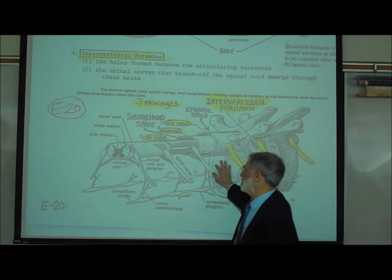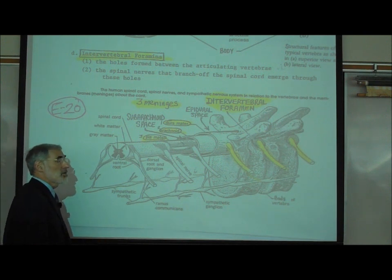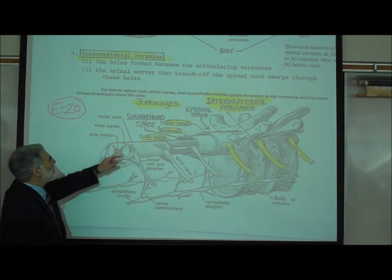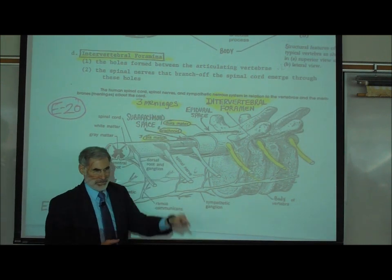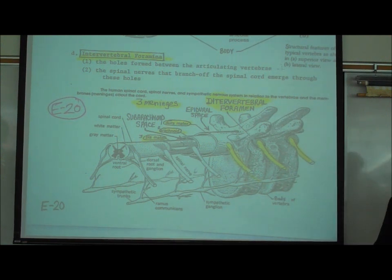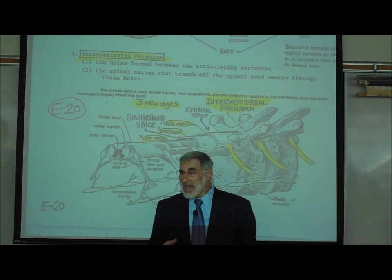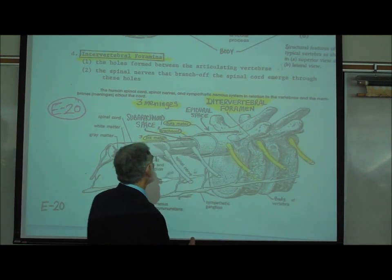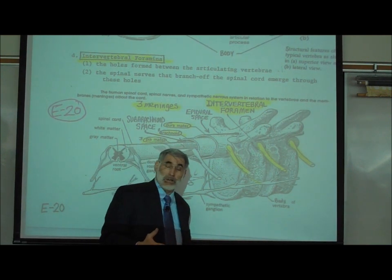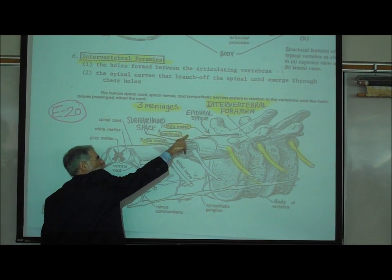Surrounding our spinal cord and brain are three membranes, known as the three meninges. You've heard the word meninges from spinal meningitis — meningitis is an infection of the meninges. There are three membranes that surround and protect the spinal cord and brain. The outermost membrane is called the dura mater.